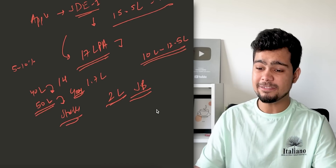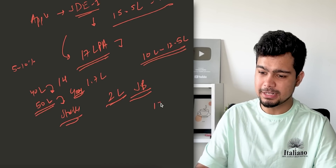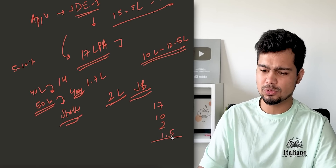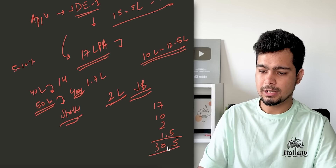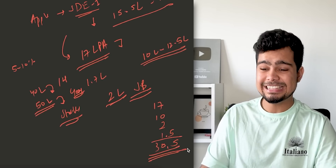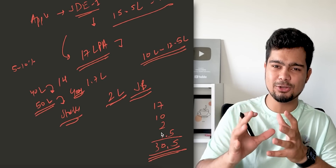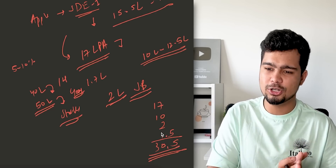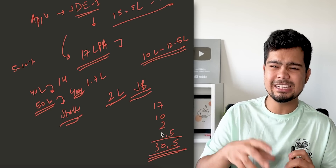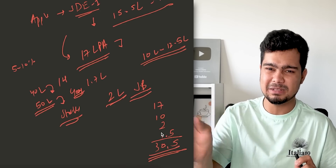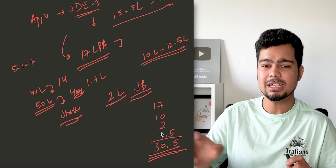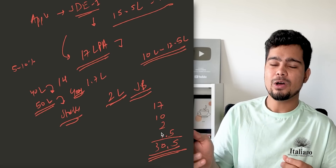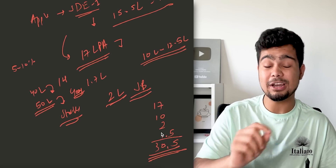So your first year total CTC as SDE 1 comes to: 17 lakhs base, plus 10 lakhs in stocks, plus 2 lakhs joining bonus, plus around 1.5 lakhs performance bonus — totaling about 30.5 lakhs. After tax, PF, and ESPP deductions, your in-hand base salary is roughly 1 lakh plus per month.